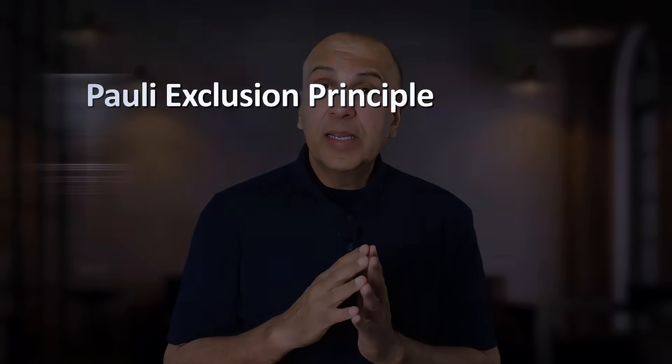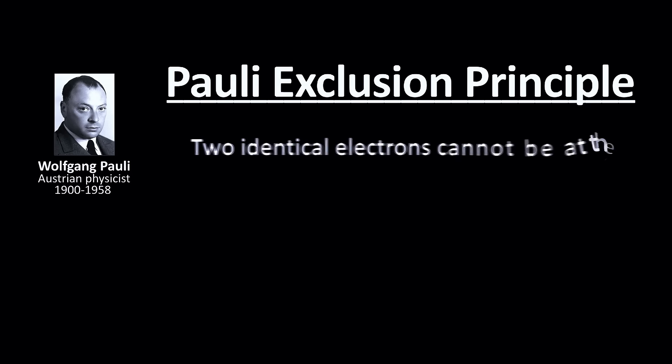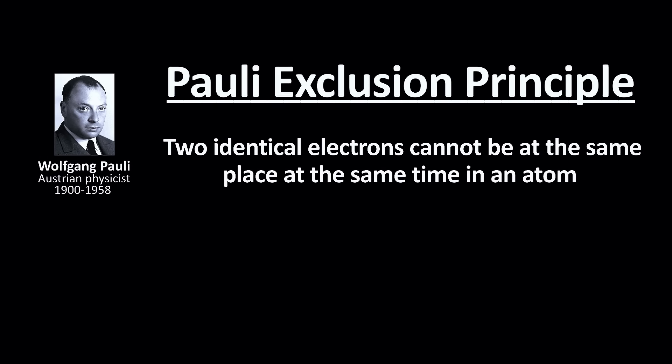The crucial quantum mechanical detail here is that the electrons obey something called the Pauli exclusion principle. This principle, simplified, says that two identical electrons can't be at the same place at the same time. And this is the key to understanding why materials become magnetic in the first place.